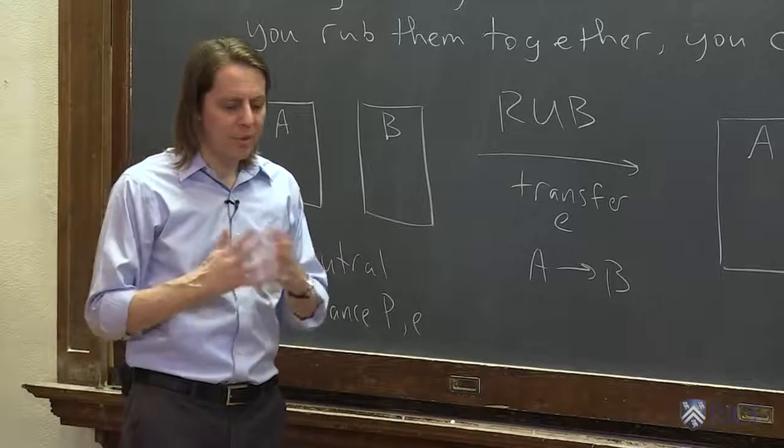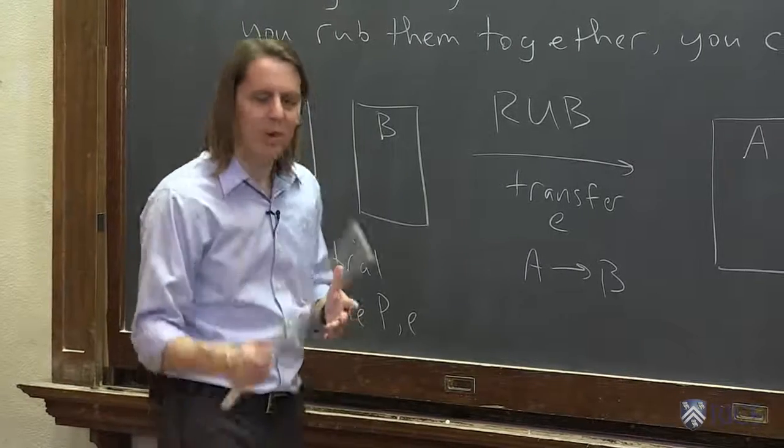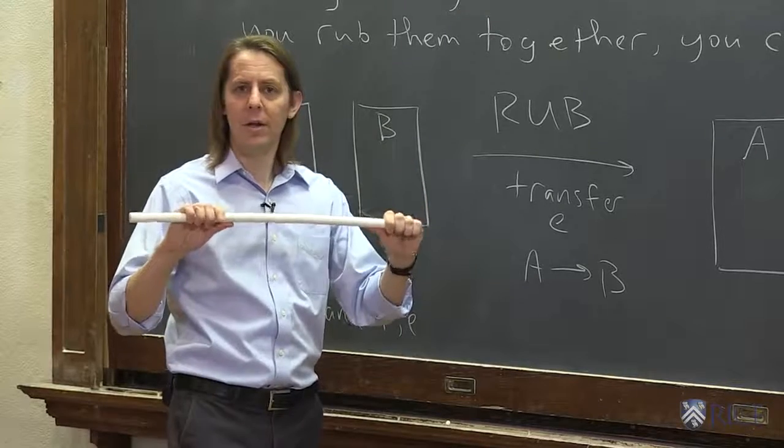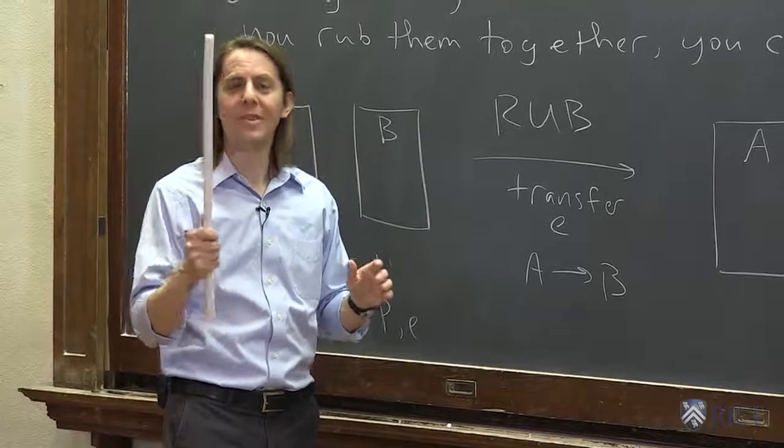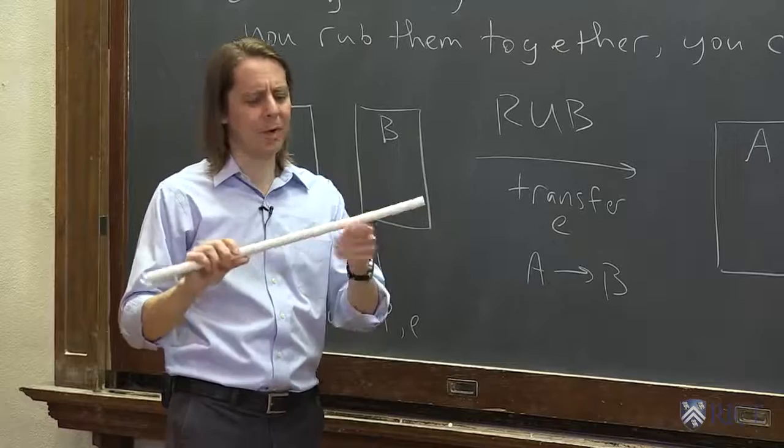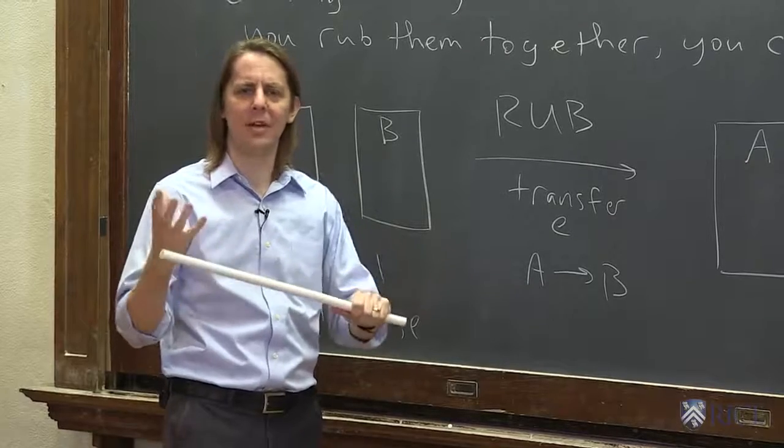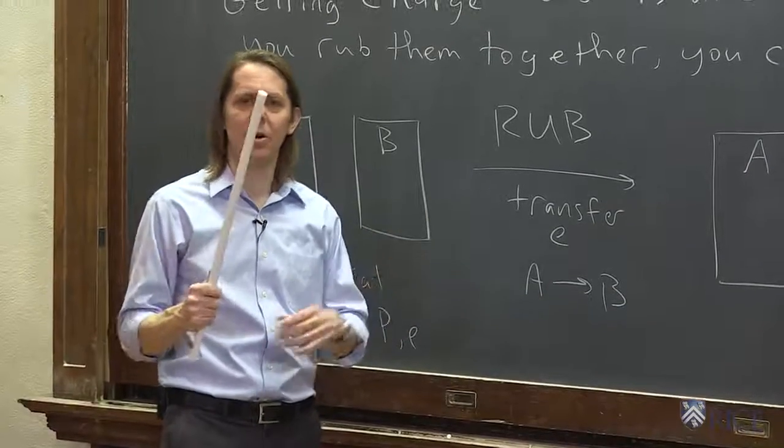Some are really efficient, some don't really transfer electrons at all when you rub them. So some of the best materials for this—one of them is teflon, so this is a big teflon rod. So this is really good for receiving electrons because it's made with a lot of fluorine in it, and fluorine is very electronegative. It likes to grab electrons, so if you rub teflon with something, it loves to get electrons.